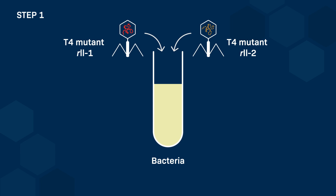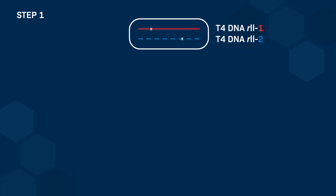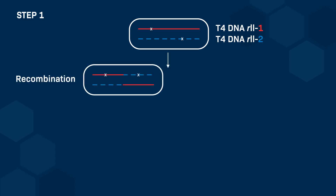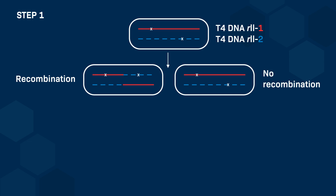These two mutant types each carry a rapid lysis mutation in a different position along their genome. On the two genomes, the Xs represent the position of the rapid lysis mutations. In rare cases, a recombination will occur between the positions of the two mutations, resulting in an exchange of chromosomes between the genomes of R21 and R22. This results in two new genomes: one containing both mutations, called R212, and one wild-type genome with no rapid lysis mutation. However, in most cases, the lack of recombination leaves the two parental genomes, R21 and R22, unchanged.